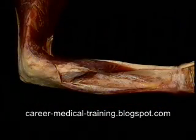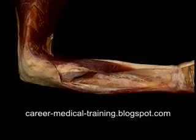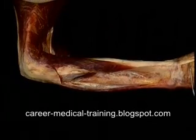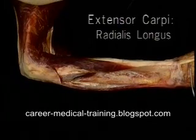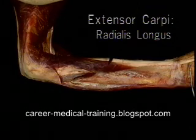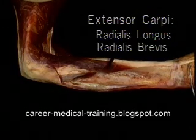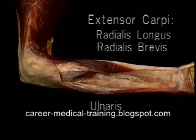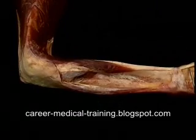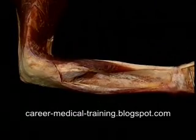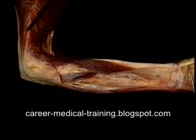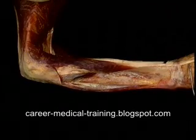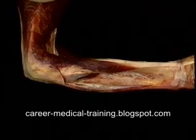Now let's go around to the other side of the forearm and see the wrist extensors. Here they are: extensor carpi radialis longus and brevis, and extensor carpi ulnaris. Brachioradialis, which goes from here to here, has been removed in this dissection.